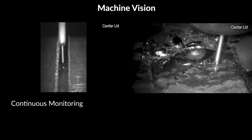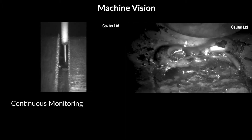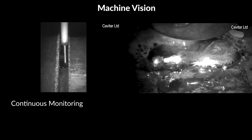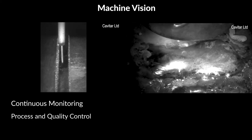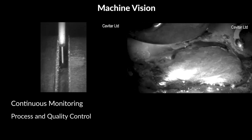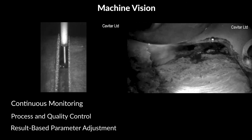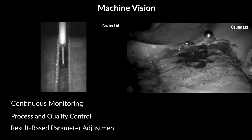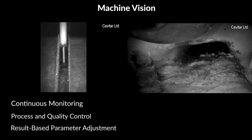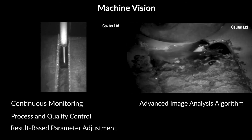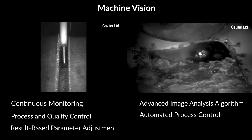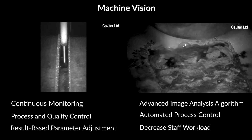Section 2: Machine Vision versus High-Speed Imaging. Machine vision refers to the continuous monitoring of industrial processes with camera-based solutions. In welding processes, machine vision can be utilized in process and quality control. The process parameters can be adjusted on the basis of the live image or results generated by image analysis. Machine vision, combined with advanced image analysis algorithms, enables automated process control and thus decreases the workload of staff.